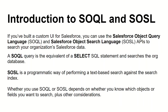SOSL is a programmatic way of performing a text-based search against the search index. In SOSL, we are not very sure where the data will be — we just know the keyword or search term, and we use SOSL to get all the data related to that keyword from fields of one or multiple objects.